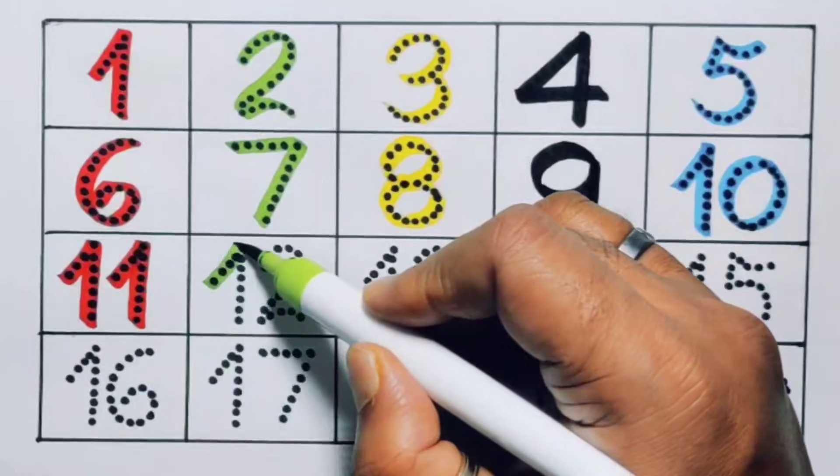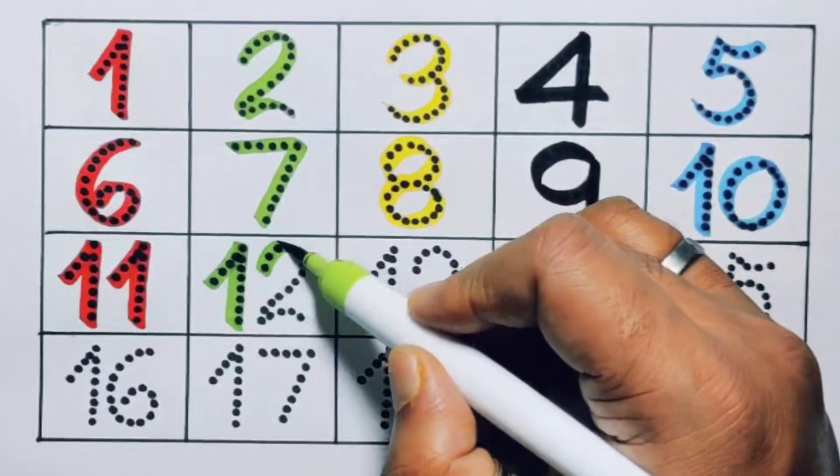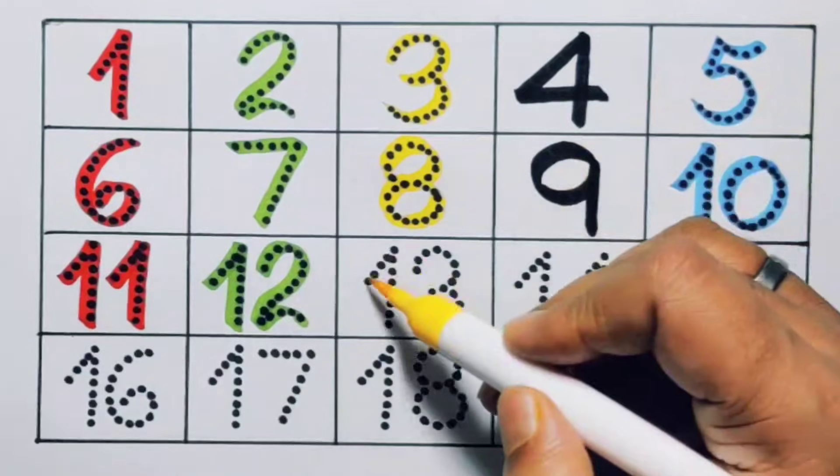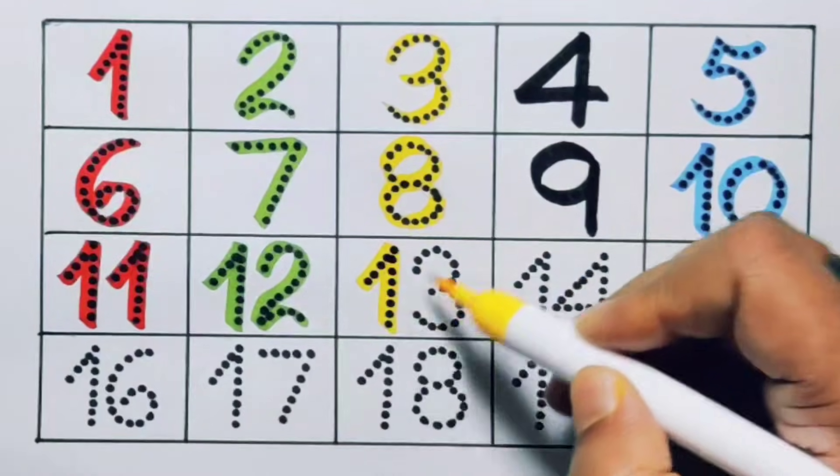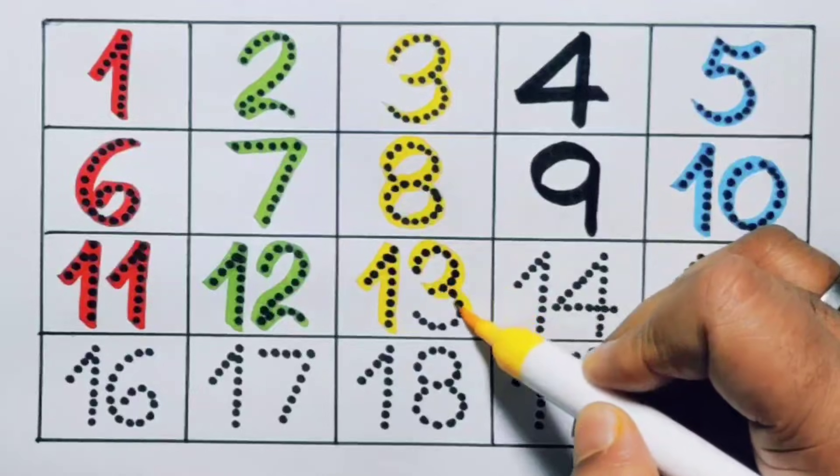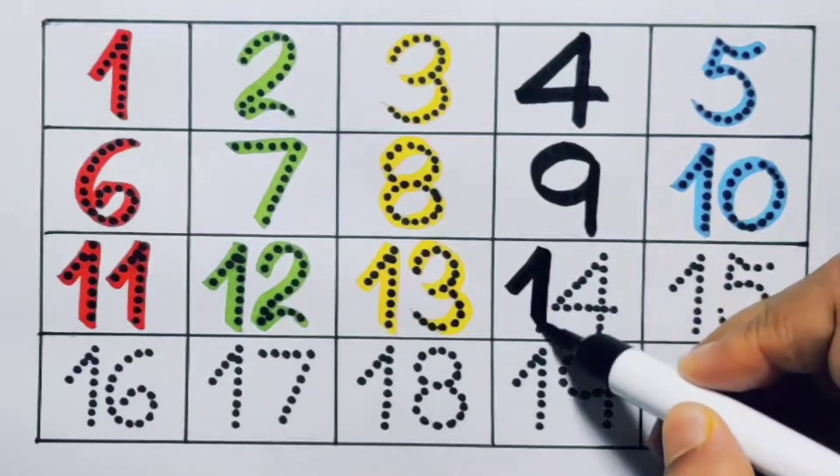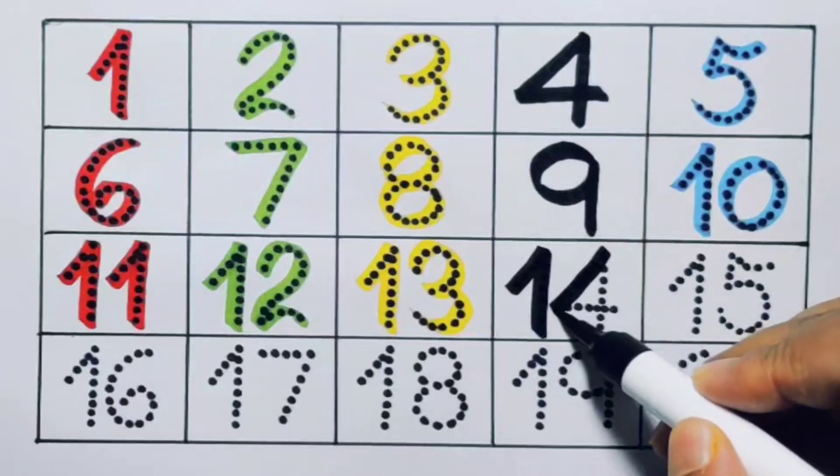Next, twelve, one two, twelve, number twelve. Next, thirteen, one three, thirteen, number thirteen. Next, fourteen, one four, fourteen, number fourteen.